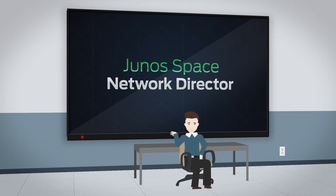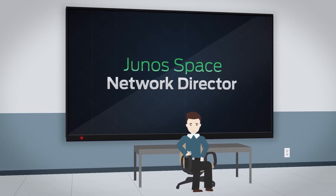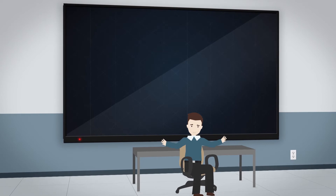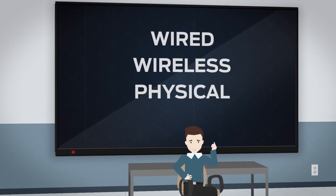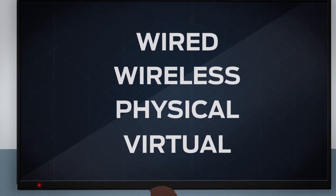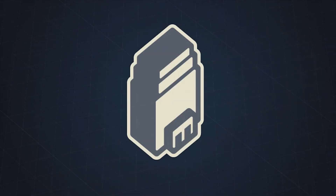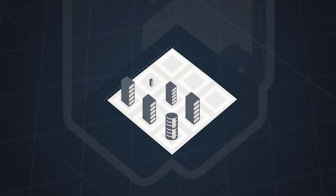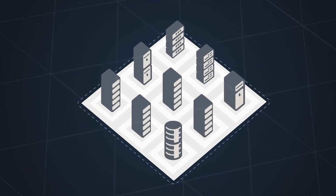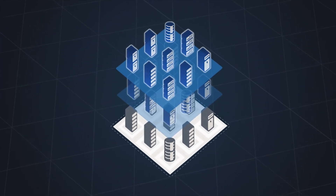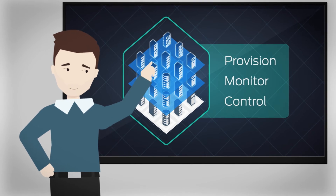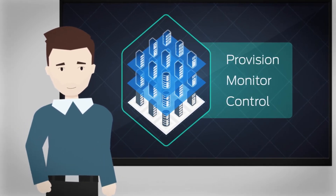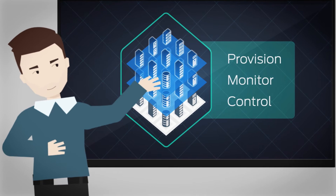But that was before Junos Space Network Director from Juniper Networks. Now I can see and control my whole wide world — wired, wireless, physical, virtual — from a single pane of glass, right here. There's our headquarters network. I can see all of our networking devices. There's our data centers, including our virtual networks. Network Director lets me provision, monitor, and control all of my networks, deployed in multiple sites from a single pane of glass.